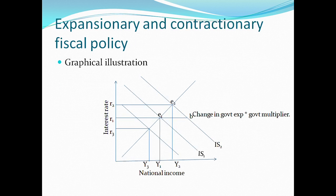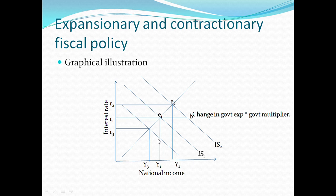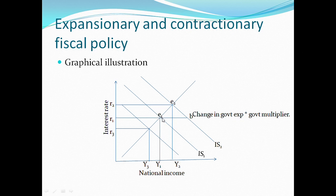The graphical illustration shows: on the Y-axis we have interest rates, on the X-axis we have national income output, and point E1 is the equilibrium between the money market (LM curve) and the goods market (IS curve), with interest rate R1 and income Y1. For expansionary fiscal policy, the IS curve shifts outward from IS1, establishing a new equilibrium at E2, which causes an increase in both interest rates and national income.